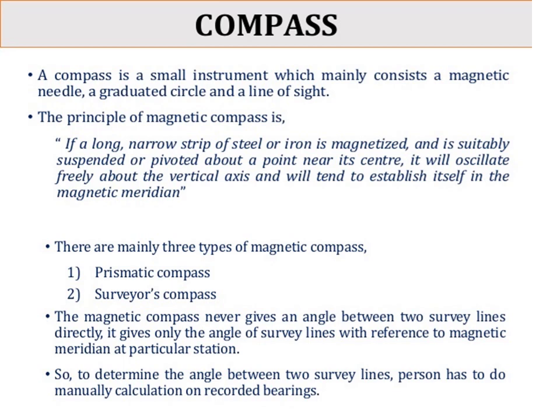The magnetic compass never gives an angle between two survey lines directly. It gives only the angle of the survey line with reference to the magnetic meridian at a particular station. So to determine the angle between two survey lines, a person has to do manual calculation on recorded bearings.